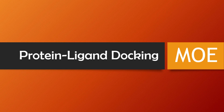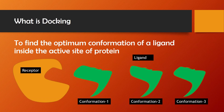What is docking? It is the process of finding the optimum conformation of a ligand inside the active site of a protein. I will explain this through animation. This yellow color is our receptor protein, and these three green colors are our ligand in different conformations. The docking software like MOE will generate these three different conformations and then place each conformation one by one in the active site of the protein to find how well it fits.